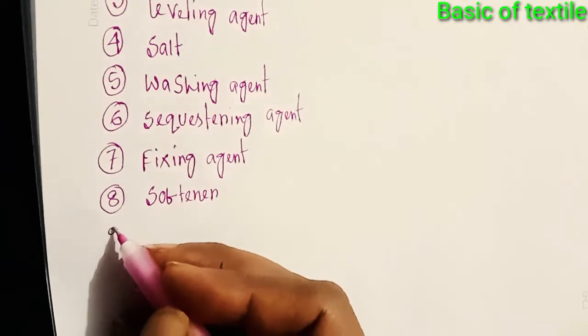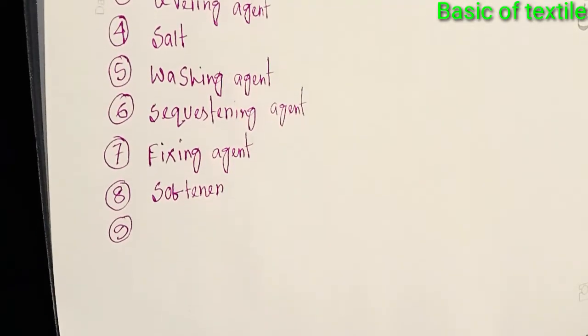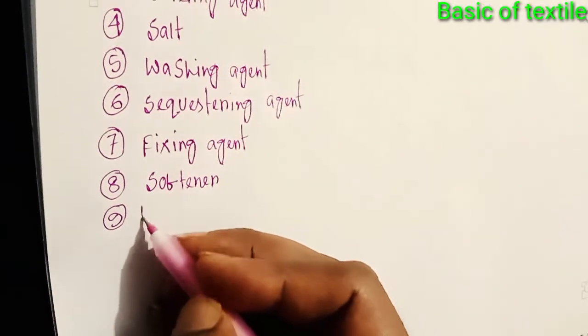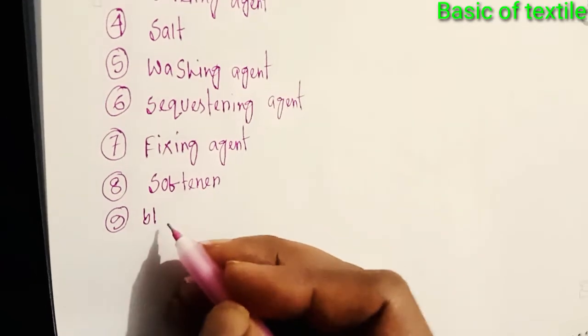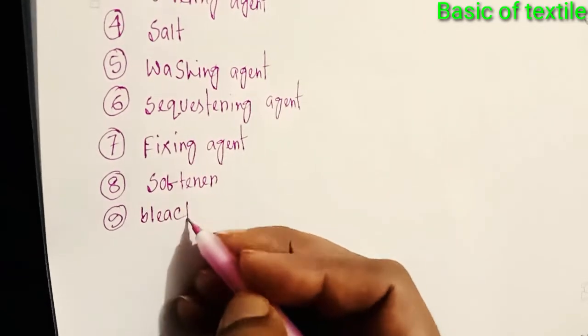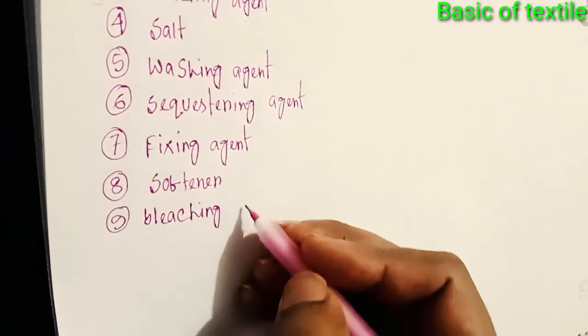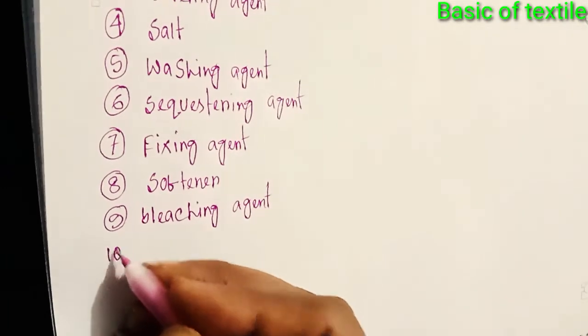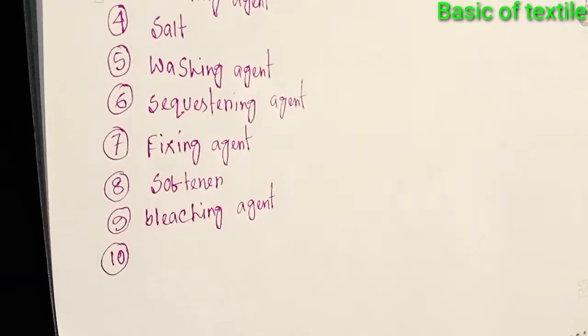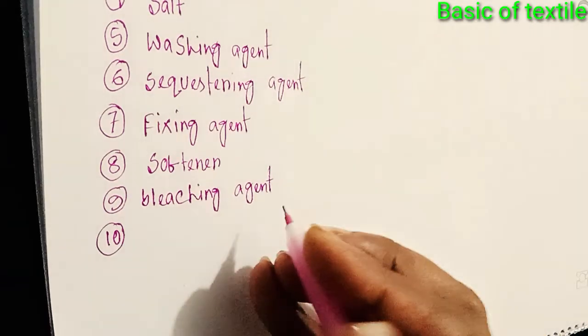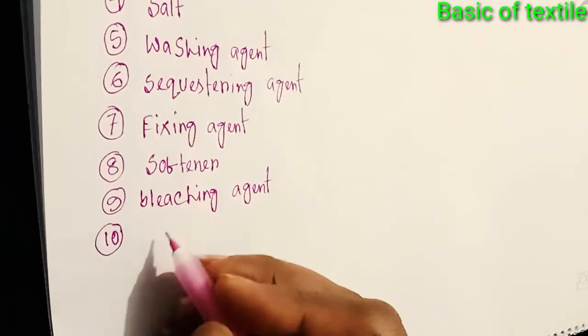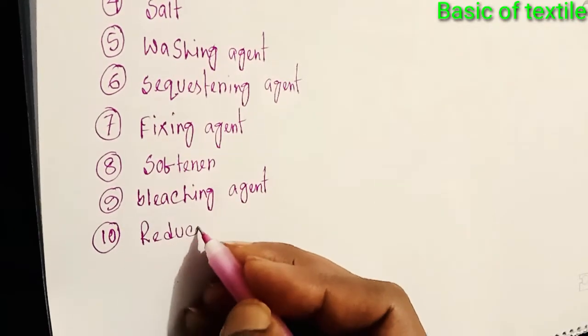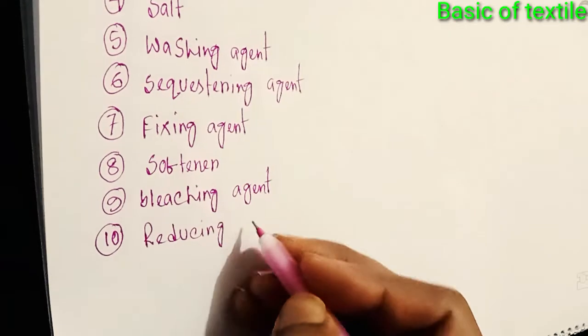Number nine: bleaching agent. Number ten: reducing agent.